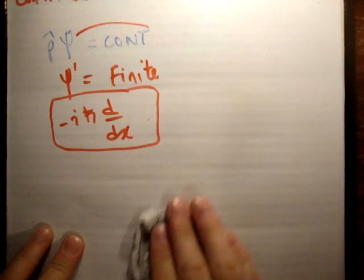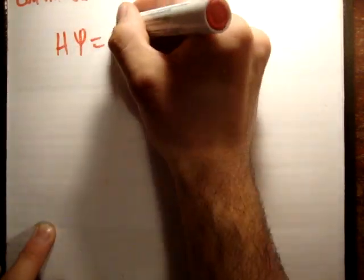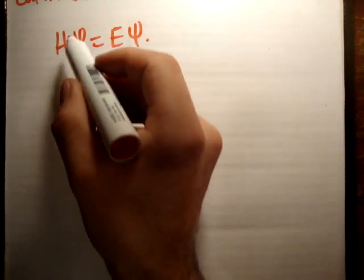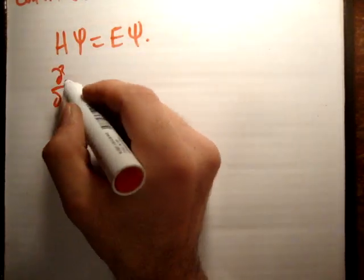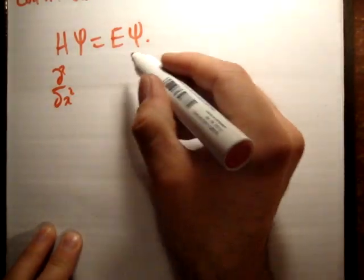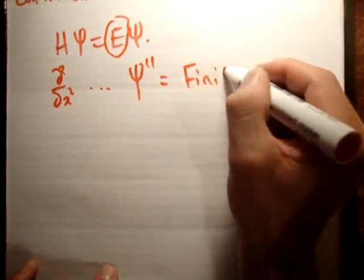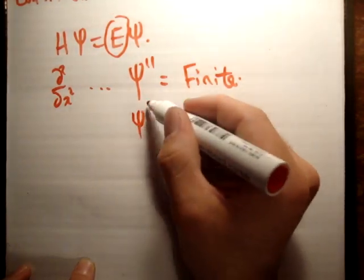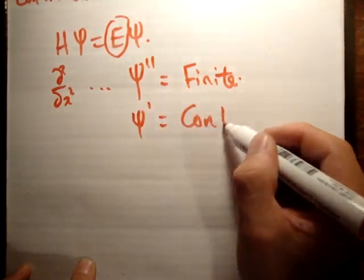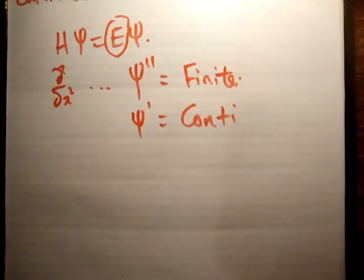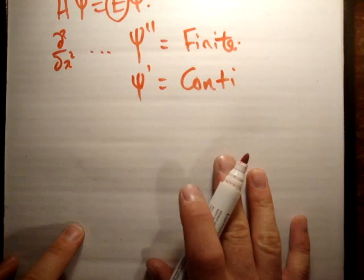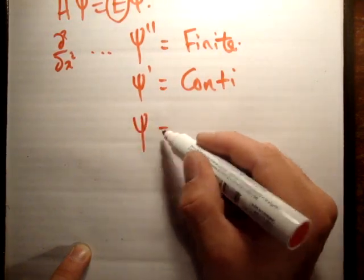Next, let's look at the Hamiltonian. If we apply the Hamiltonian on psi, it's the same as E times psi, at least for the time-independent Schrödinger equation. The Hamiltonian has a second derivative, d²/dx². Because it's equal to the energy, we cannot have an infinite energy, so the second derivative must equal a finite value. That means the first derivative must be continuous, and similarly, the wave function itself must be continuous.